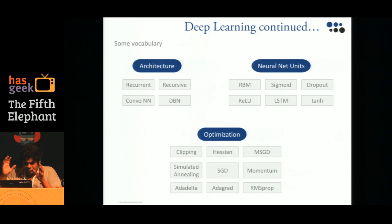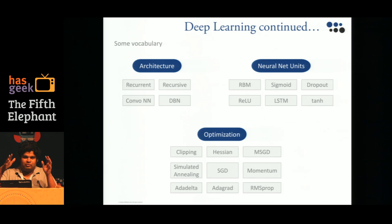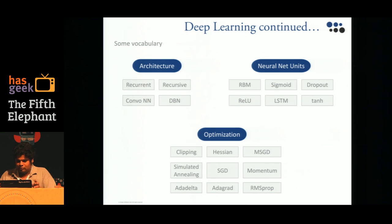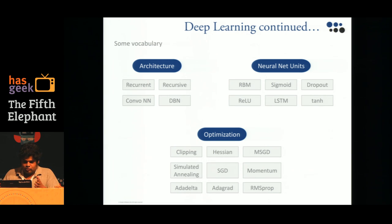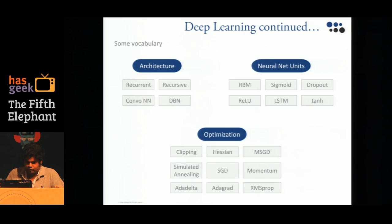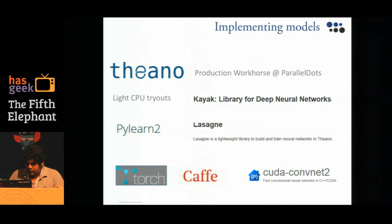Since this is a short talk, I can't go through each architecture in depth. But if you've seen neural network literature, there are a lot of buzzwords — some are neural net units, some are optimization strategies, and some are architectures. I can come back to any of them if you have questions.